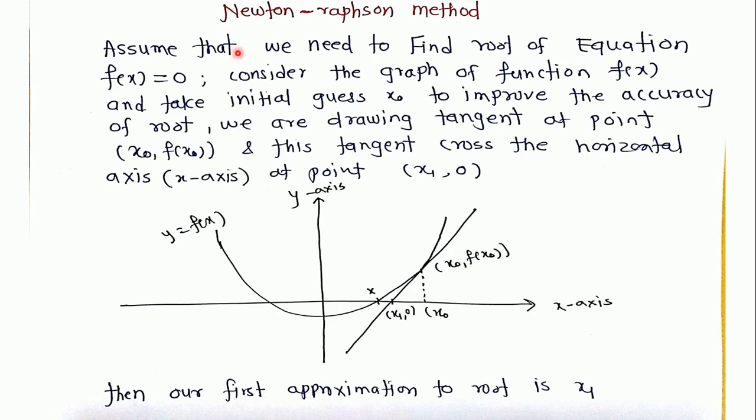Assume we need to find the root of the equation f is equal to 0. Consider the graph of the function f. This is the graph of the function. We are taking initial guess x0. This is our initial guess and this point is (x0, f(x0)).